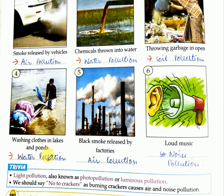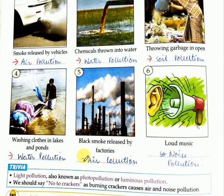Then the fifth image — you see that a lot of smoke is being released by the factories. This smoke is very dangerous for human beings and it is polluting our air. So the answer is air pollution. Now sixth — you can see loud music is being played and it is very harmful for our ears. So the answer is noise pollution.